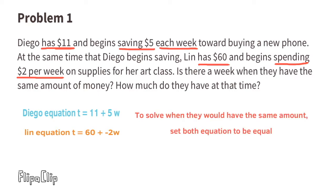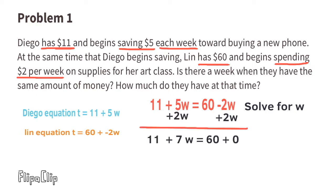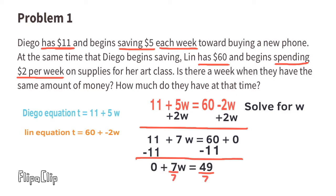To solve when they would have the same amount, set both equations equal to each other. So we can write Diego's equation, 11 plus 5w, equals Lynn's equation, 60 minus 2w. Solve for w. Add 2w to both sides of the equal sign, subtract 11 from both sides of the equal sign, and then finally divide both sides by 7.